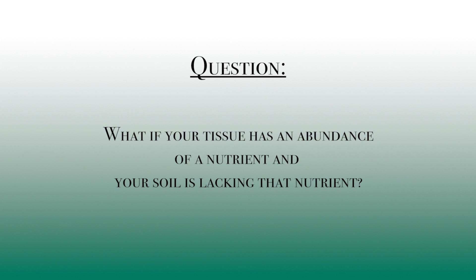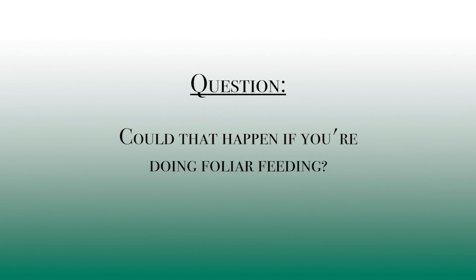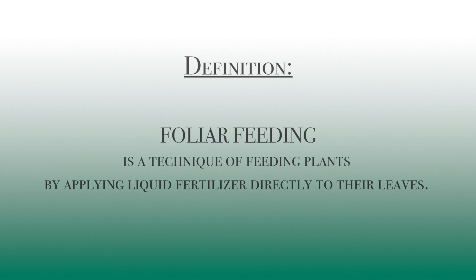If your soil has a lack of a nutrient but your plant has an abundance of it, it could be several things. It could also be that you're sampling the wrong tissue, because we do see elevated levels in younger tissue of certain nutrients, and that can throw off your readings. If you're doing foliar fertilization, that might be a factor as well — that's a great example of why tissue sampling results need to be interpreted carefully.